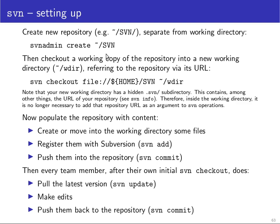Then we need to check out from the repository a working directory — the working directory will be separate from the repository. Let's say we put another subdirectory in our home directory called wdir for working directory. In the svn checkout command you have to refer to the location of the repository by URL. This is to facilitate various remote access protocols in case you access the repository via SSH or via HTTP, but in this case we just access the repository via the local file system, so we use the file:// URL and then the path to our home directory, and the additional argument here is the name of the working directory.